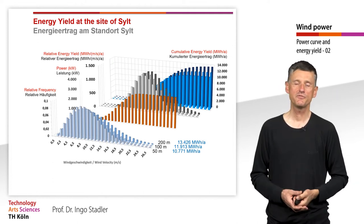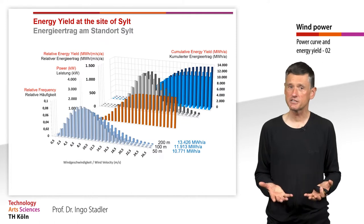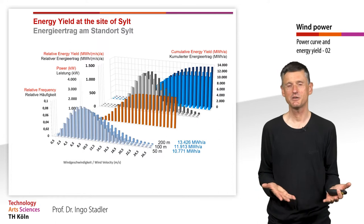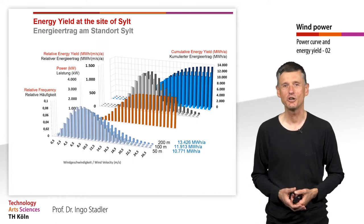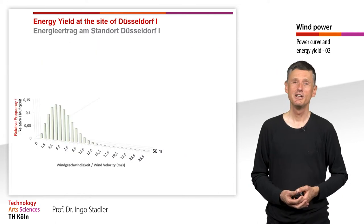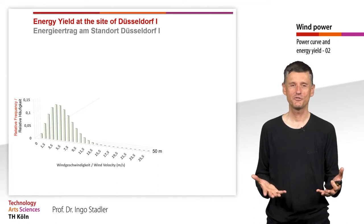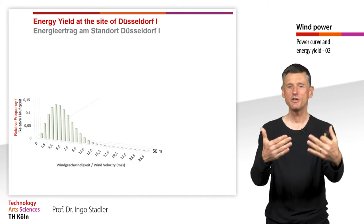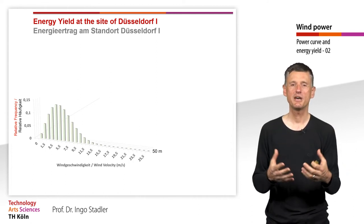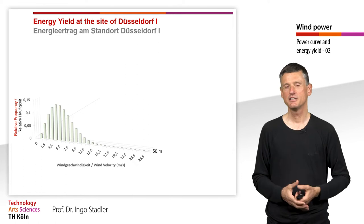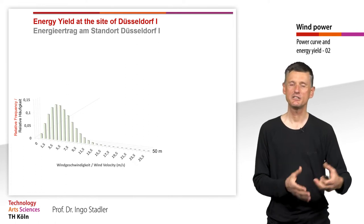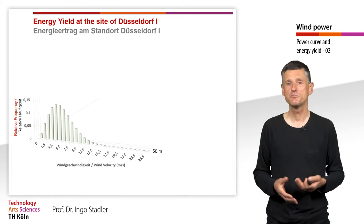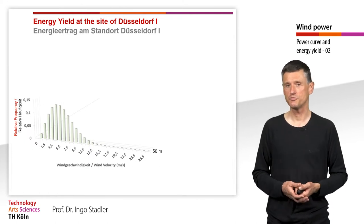Now we look at a second place — a bad wind site. As someone living and teaching in Cologne, that is Düsseldorf — not because it's a bad city, but because this location far from the coastline is a bad wind site. There we have a different relative frequency of wind velocity, but the same power curve of the wind turbine.